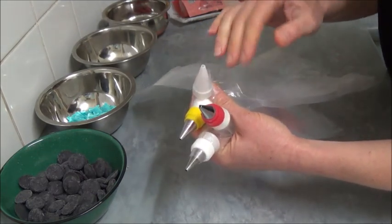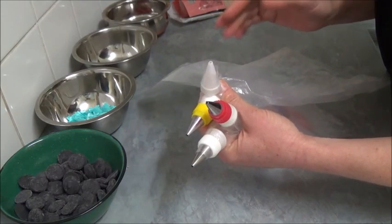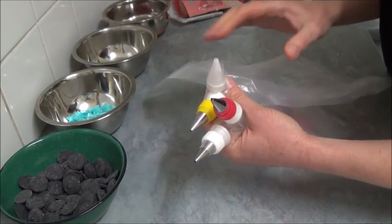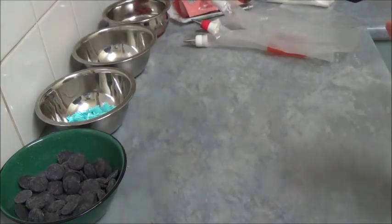You don't have to use piping bags. You can just use a ziplock bag and snip a very little corner and pipe that way as well. So let's melt all candy melts first.